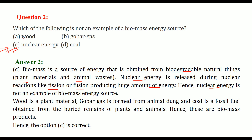On the other hand, wood is a plant material, biogas is formed from animal dung, and coal is a fossil fuel that has come from buried remains of plants and animals. So these are all biomass products.